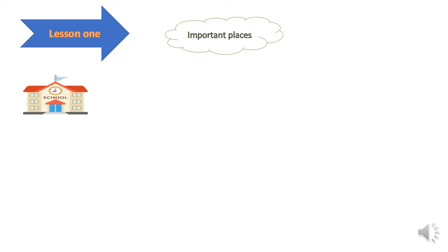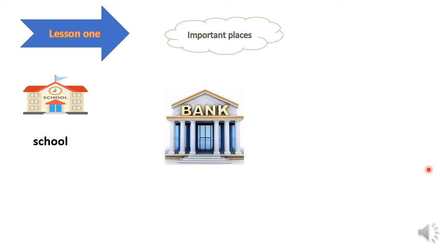We will start with some important places which we can see around us in our town. The first place is school. This is a school. The school is a place we go every day to learn. Let's see how we write the word 'school'. It starts with letter S, and after that we have C, H, O, O, L, which make 'school'.